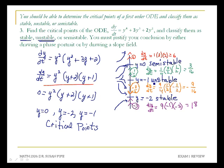So stable is an attractor. Unstable is called a repeller, and semi-stable is neither an attractor nor a repeller.